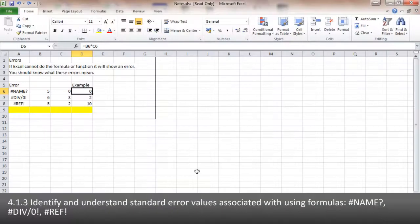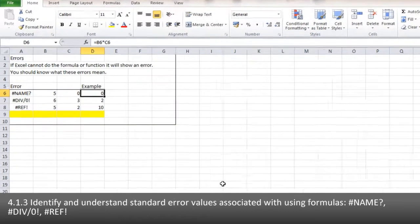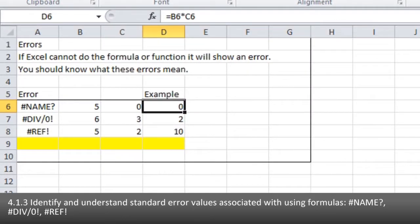4.1.3 asks you to identify and understand the standard error values associated with using formulas. These are the name error, the divide by zero, and the reference error. So what do we mean?